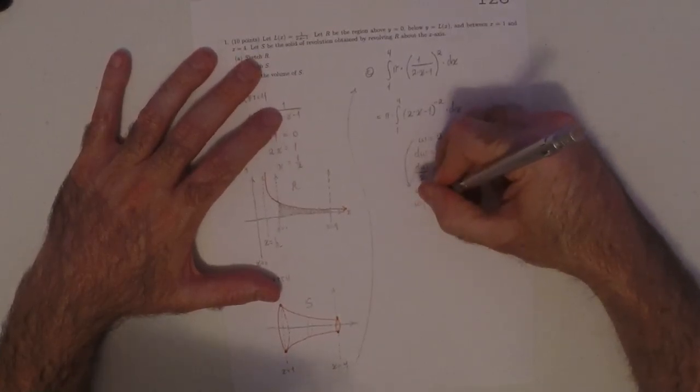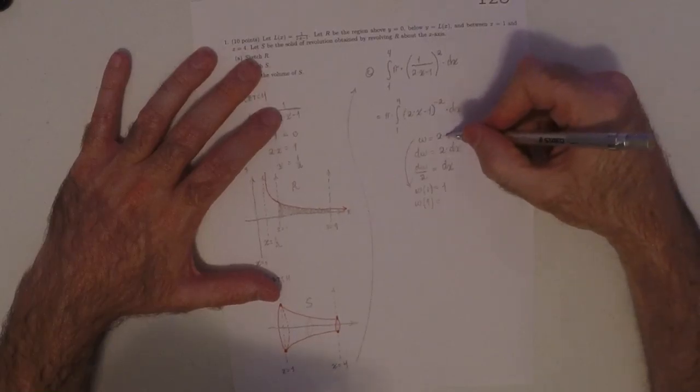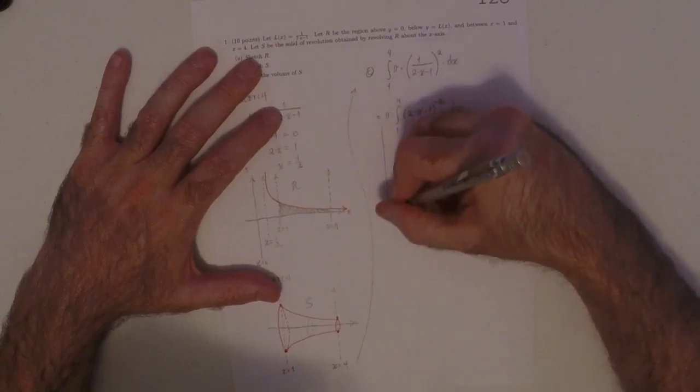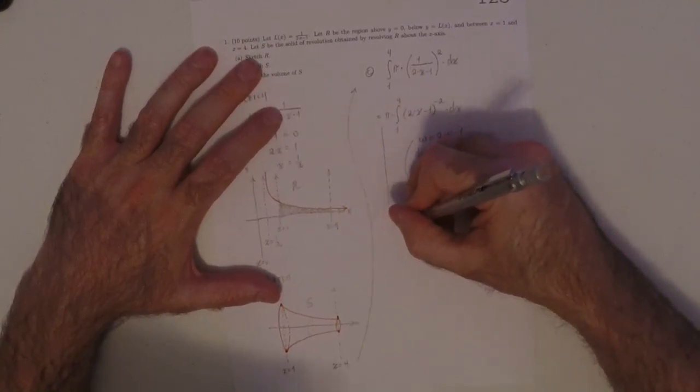And then, w, when x is 4, would be 8 minus 1 is 7. So 7. As a result, the new integral is pi.